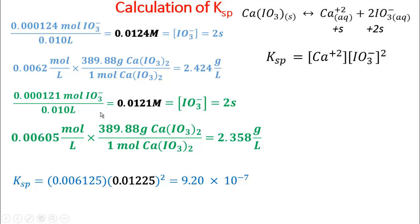To get the solubility, we take the IO3- concentration, which is 2S, and divide by 2 to get S. Multiplying by the molecular weight gives about 2.4 g/L for one trial and about 2.3 g/L for the second filtrate — so about 2.3 to 2.4 grams per liter. Alternatively, you can express the solubility S in concentration terms, averaging about 0.00605 to 0.0062 molar.